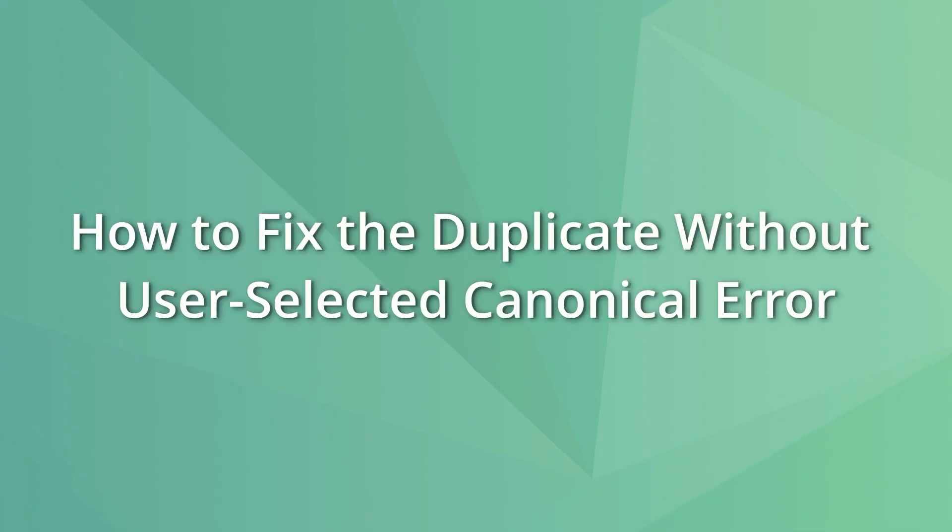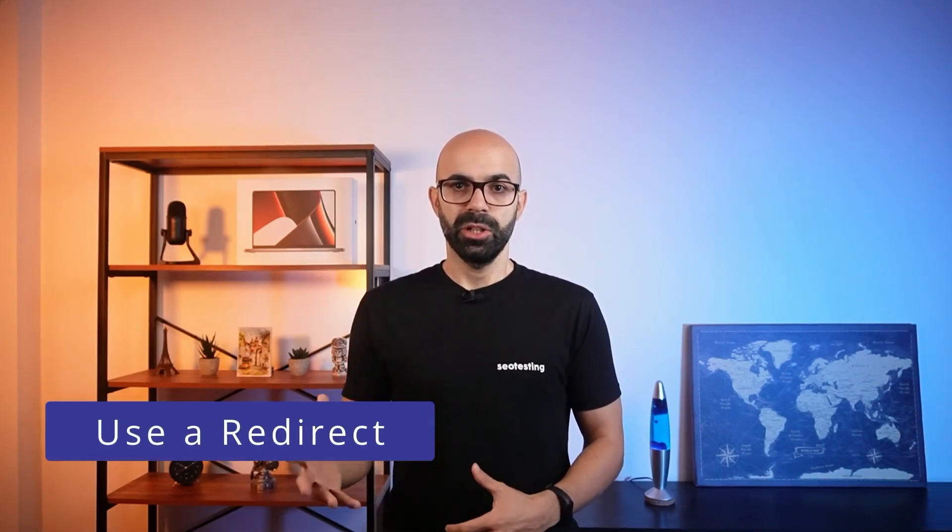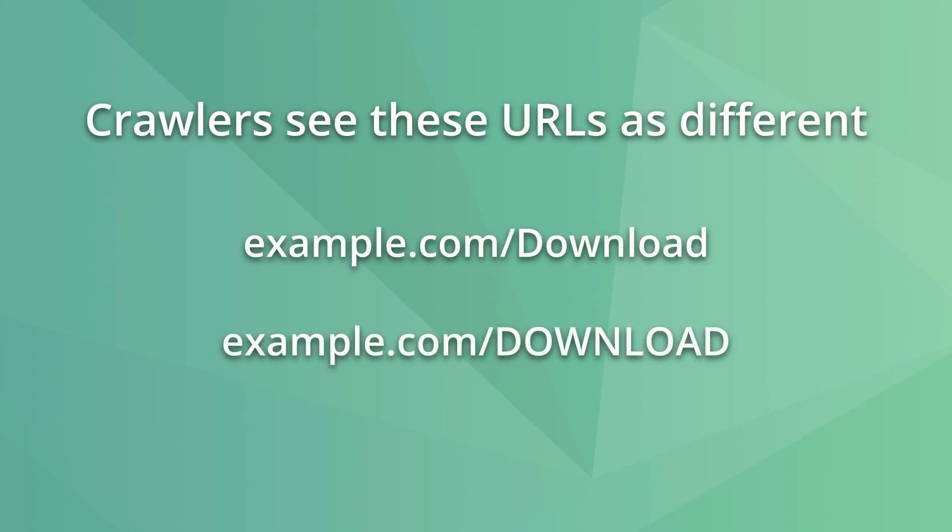Now let's see what you can do to fix pages marked as duplicate without user selected canonical. Sometimes you may have similar or duplicate pages on a site that don't need to be there. In this scenario, the best option is to implement 301 redirects on pages you don't wish to be indexed. For example, you can do this when you have two URLs with different capitalization. Google sees upper and lowercase pages as different, so redirecting one to the other tells Google to remove redirected pages from the index.